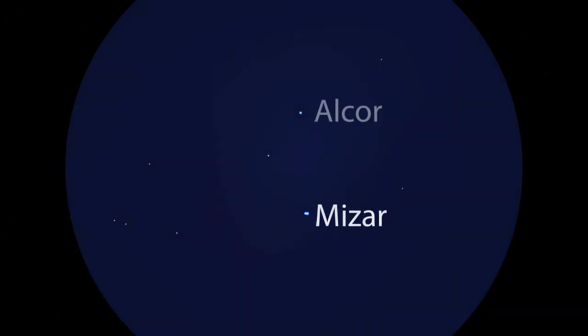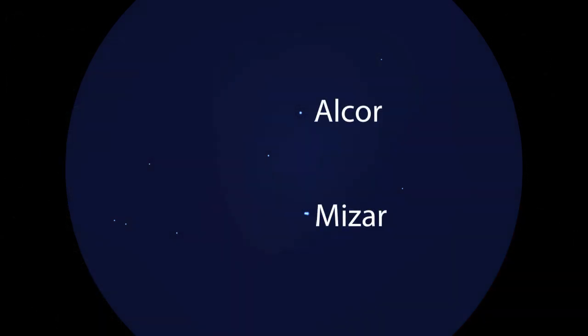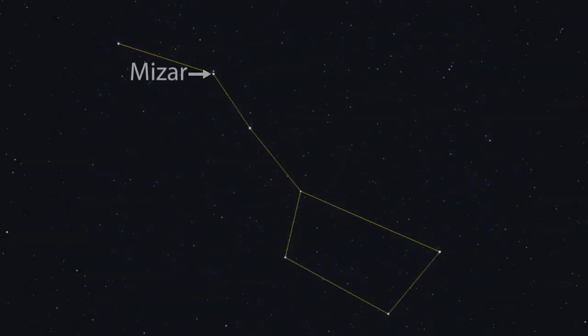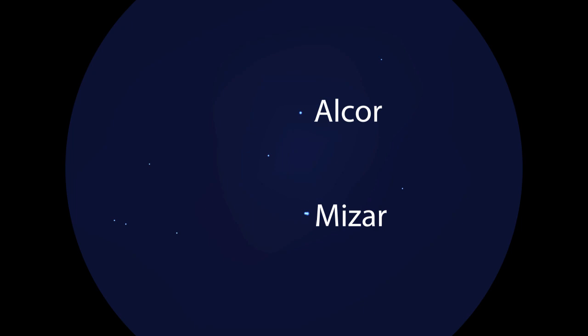And while you're in the area, you might as well check out Mizar and Alcor, the most famous double star in the sky. Anyone with good eyesight can see these stars without a telescope, but seeing Mizar split into two separate stars with a telescope is always a treat.